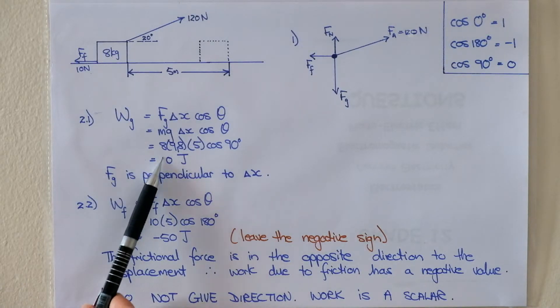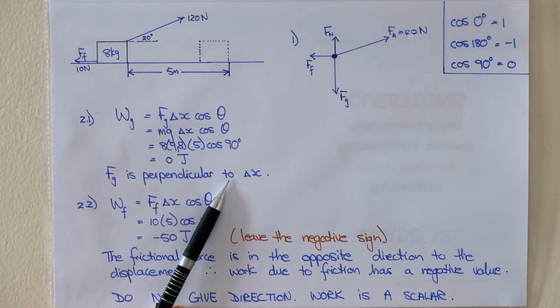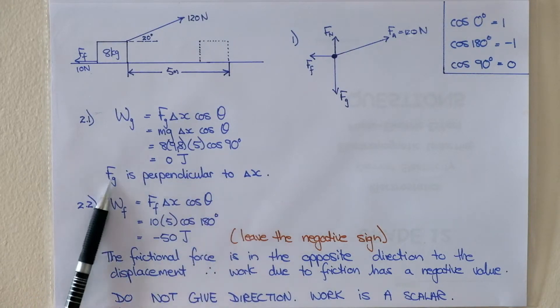So it's zero joules of work due to the gravitational force because Fg is perpendicular to delta x. This is not part of your answer. It's just an explanation.